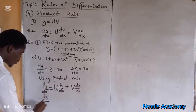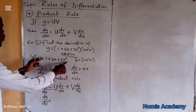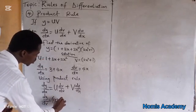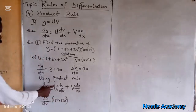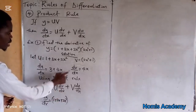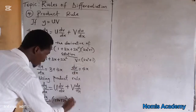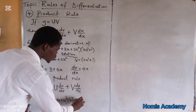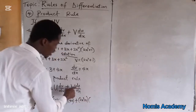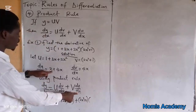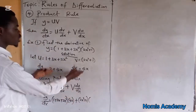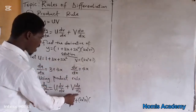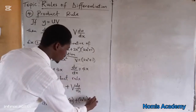So dy over dx is equal to: u is 1 plus 3x plus 2x squared, multiplied by dv over dx which is 4x, plus v which is 2x squared plus 1, multiplied by du over dx which is 3 plus 4x. You can see we are substituting the four things into the product rule.